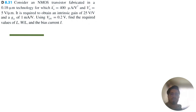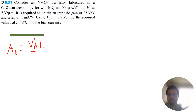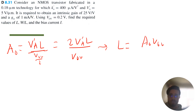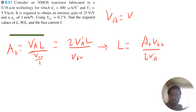I would start by leveraging the following equation for intrinsic gain: A0 equals 2·VA'·L divided by V overdrive. We have the values for everything except L, so we can rearrange to get L equals A0·V overdrive divided by 2·VA'. Note that VA (the Early voltage) is simply VA' times the length L.